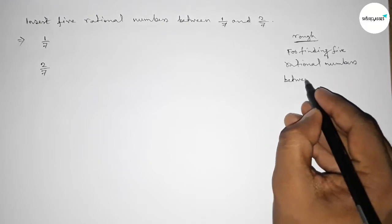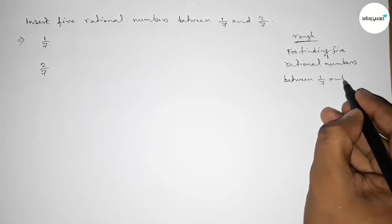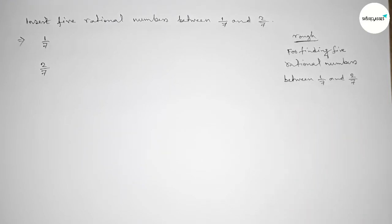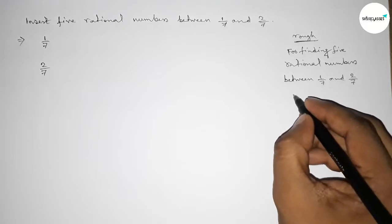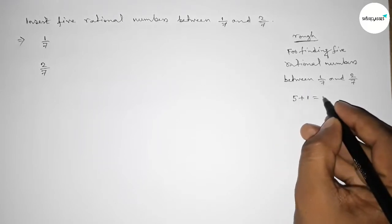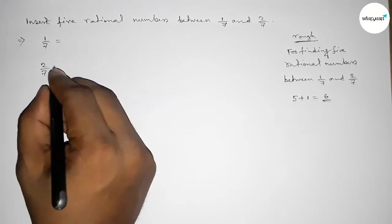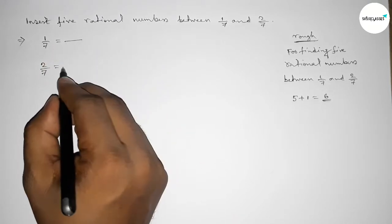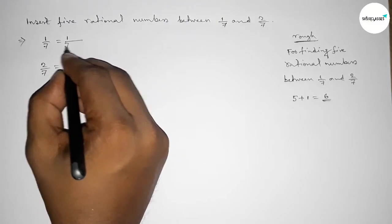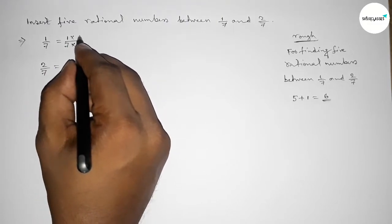We have to follow this method: we should multiply both numbers by 5 plus 1 equals 6. So now multiplying both numbers by 6 - here 1/7 multiplying up and down by 6, and also 2/7 multiplying by 6.